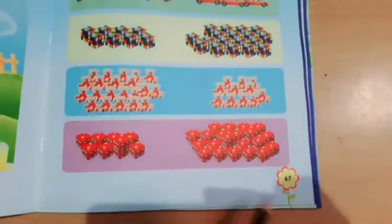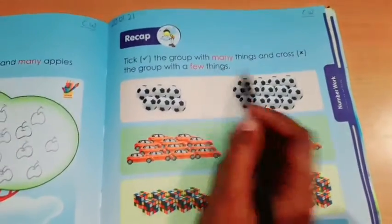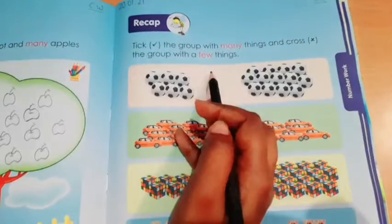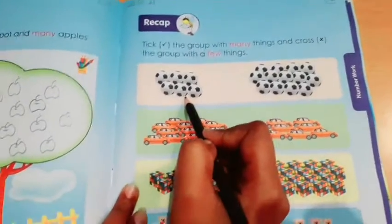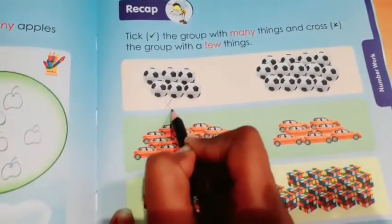Now come to page number 67. Okay, here you have to tick the group with many and cross the group with few things. So tell me, are these many or few? These are few, so we will cross it.